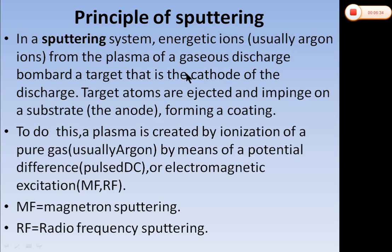Principle of sputtering and sputtering system: Energetic ions, usually argon ions from the plasma, bombard the target, which is the cathode of the discharge. Plasma is the fourth state of matter — a gaseous discharge. Target atoms are ejected and impinge on a substrate forming a coating. To do this, a plasma is created by ionizing a pure gas — argon — converting it into Ar+ ions by means of a potential difference or electromagnetic excitation, which may be MF (magnetron) or RF (radio frequency) sputtering.